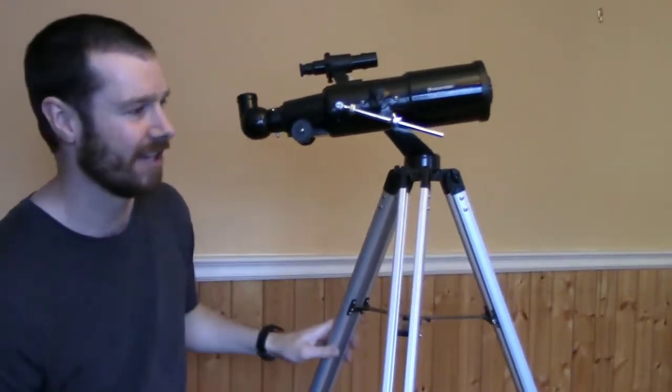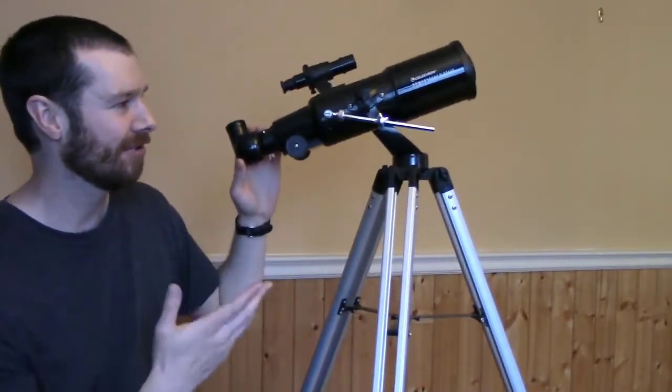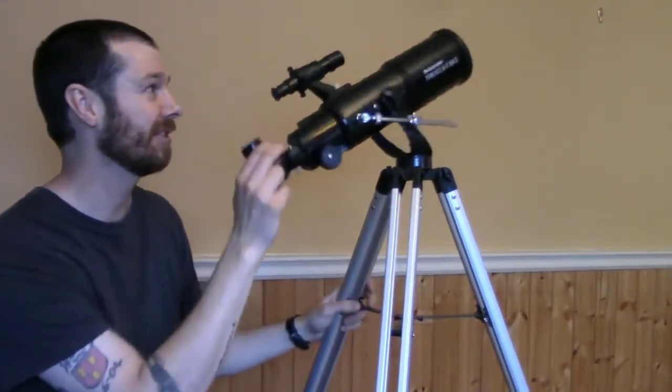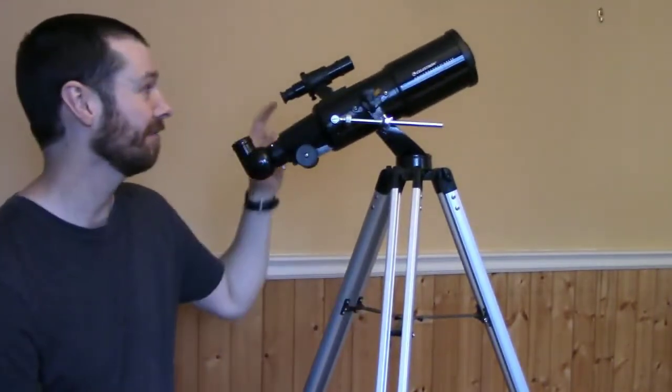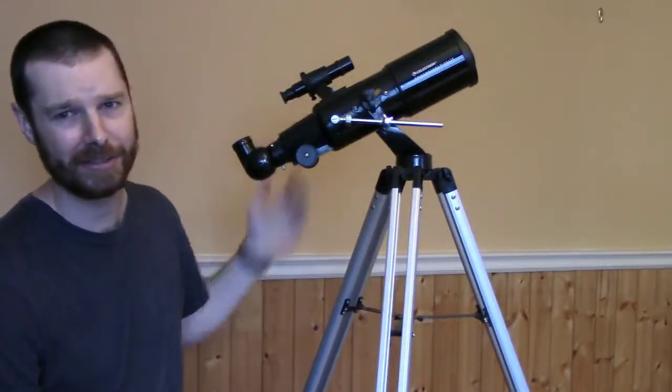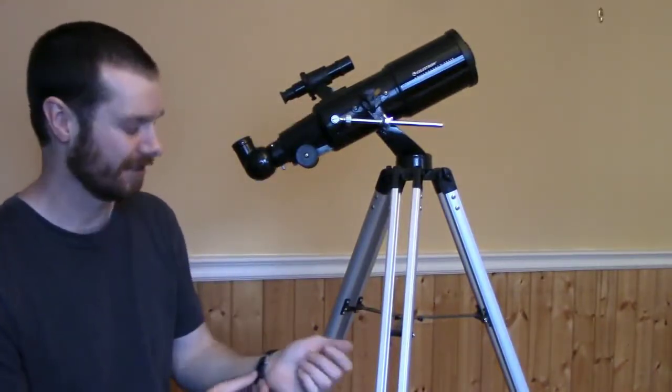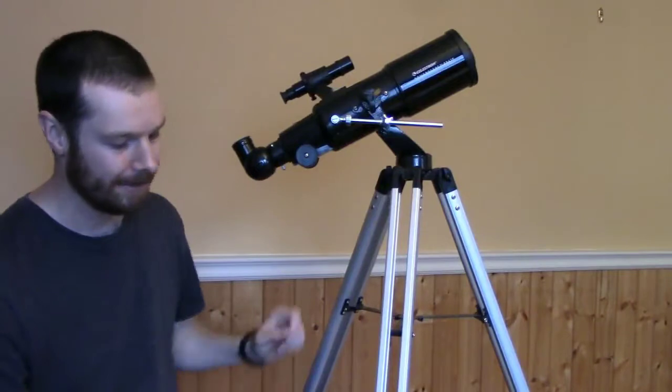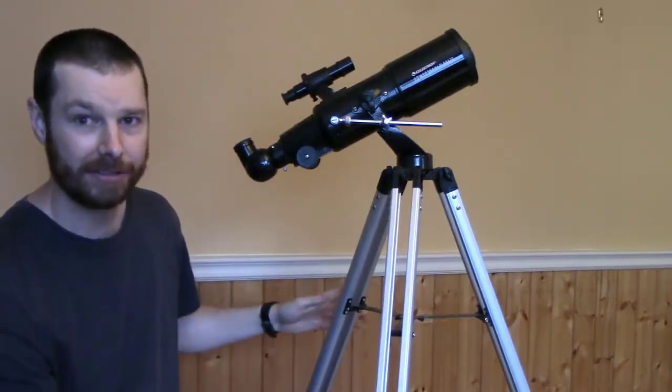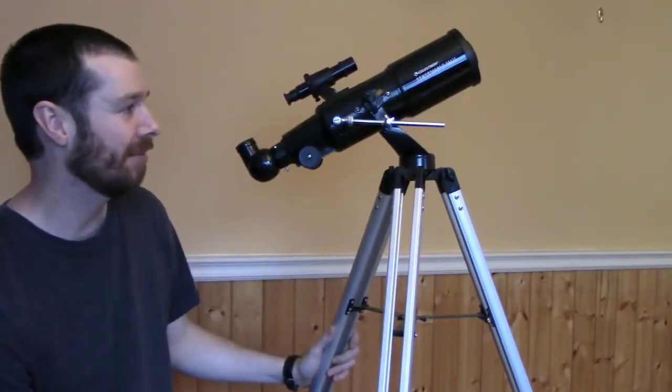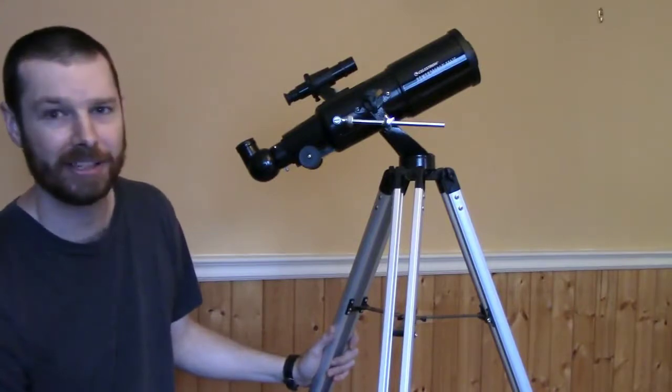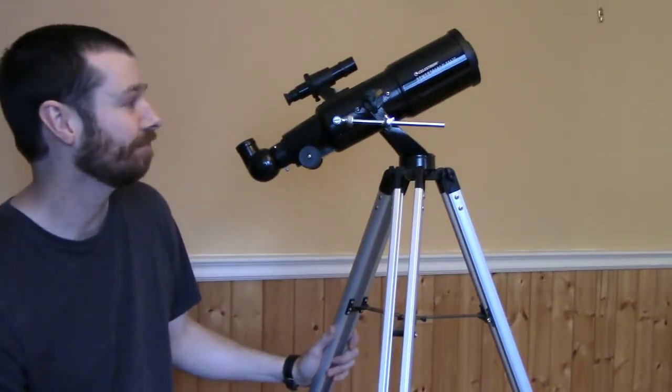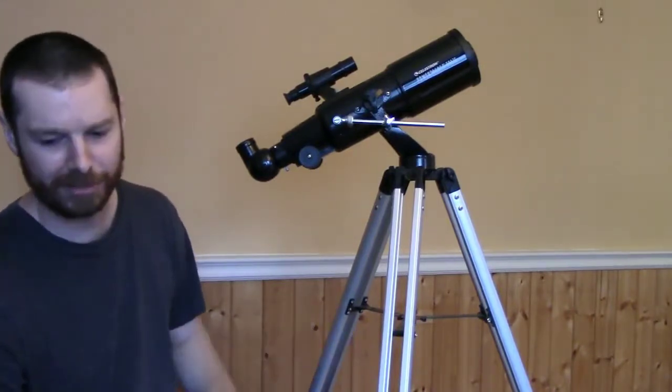different knobs, adjustment knobs here, make sure this is pointed in the same direction as this. As you get used to using this mount, you can almost just pinpoint objects just using this. But this finder scope is helpful of course for finding smaller things. The tripod is pretty sturdy in my opinion. I haven't had a problem with it. I really haven't had any problems with this telescope in general.